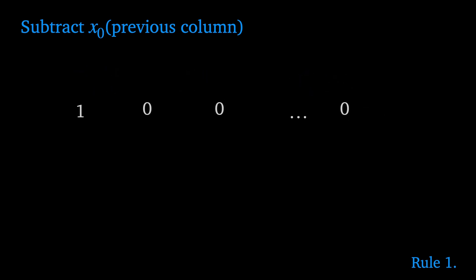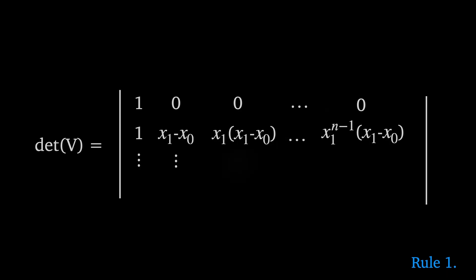Now we can do the same with the second row subtracting x sub 0 times the previous column for each column except the first. With a little rearranging we see that each column except the first now has a factor of x sub 1 minus x sub 0. Continuing the calculation for the rest of the rows we end up with this. Notice that each row now has a factor x sub i minus x sub 0 except in the first column.